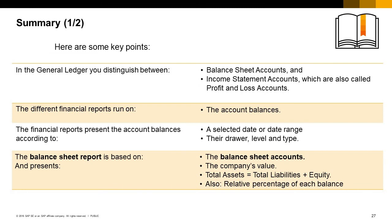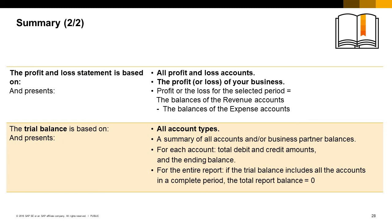Here are some key points to take away. In the general ledger, you distinguish between balance sheet accounts and income statement accounts, also called profit and loss accounts. The different financial reports run on account balances, presenting them according to a selected date or range and their drawer, level, and type. The balance sheet report is based on balance sheet accounts and presents the company's value using the formula: total assets equals total liabilities plus equity. It displays the relative percentage of each balance. The profit and loss statement is based on all profit and loss accounts and presents the profit or loss, calculated as the difference between revenue account balances and expense account balances.